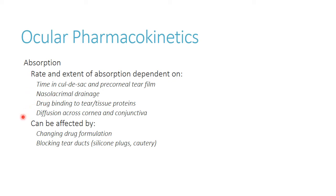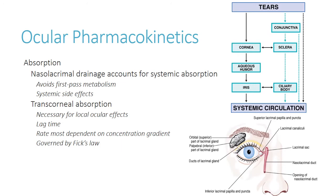You can change all of this by changing the drug formulation or by blocking the tear ducts. We can do this physically — for patients with chronic dry eye, you might cauterize the nasolacrimal ducts to keep tears around longer, or use silicone plugs. When absorption occurs after nasolacrimal drainage, you can have systemic effects, and it bypasses first pass, potentially leading to side effects.